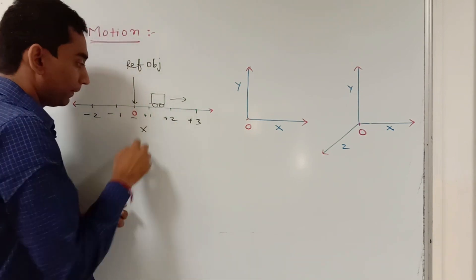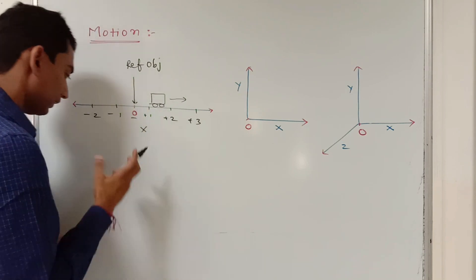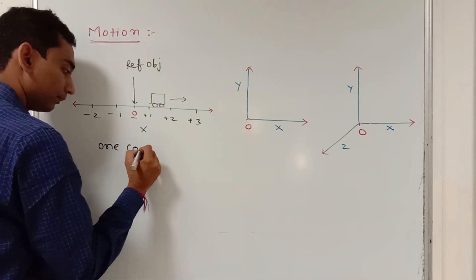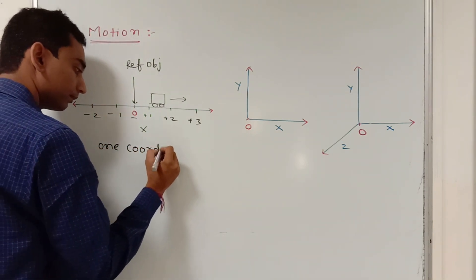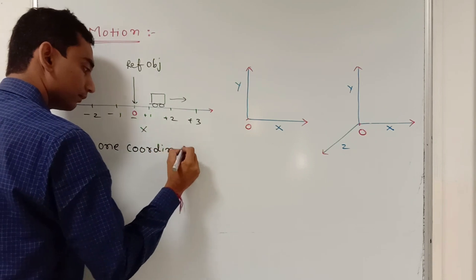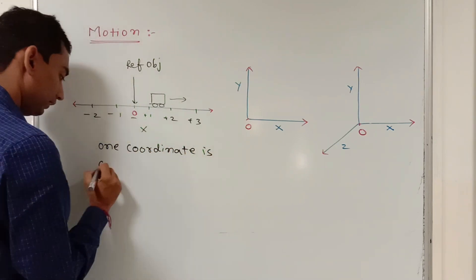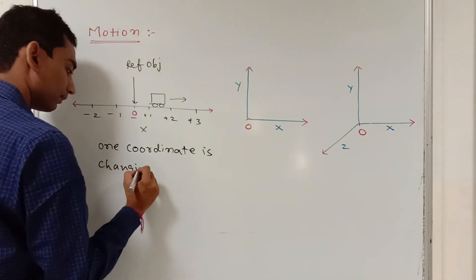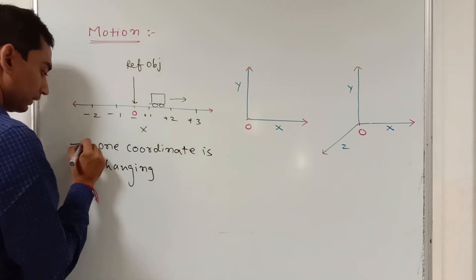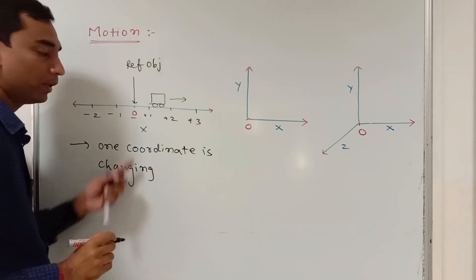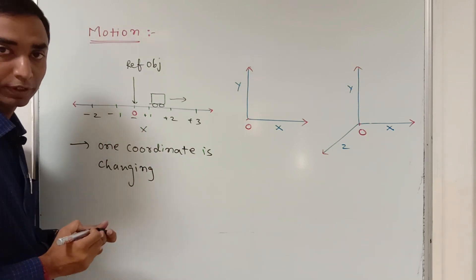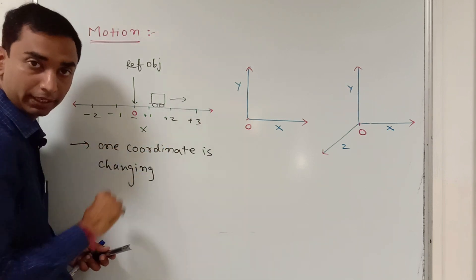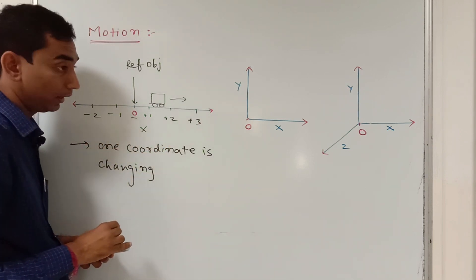Since only one coordinate is changing, it is said to be motion in one dimension.